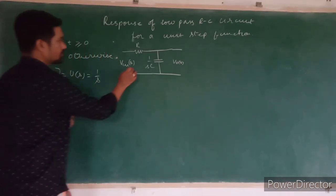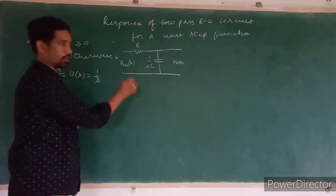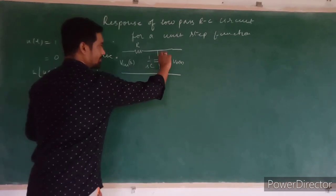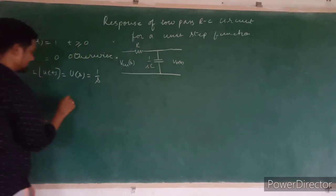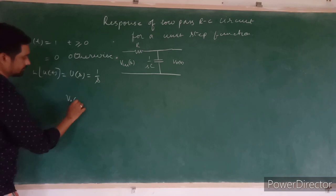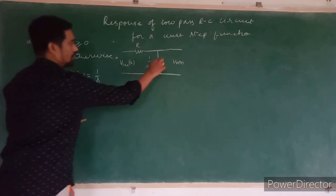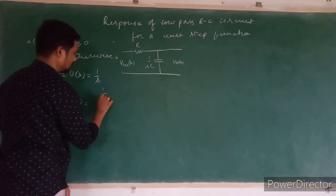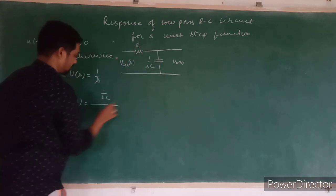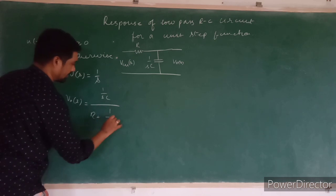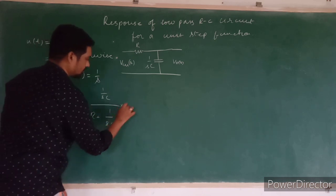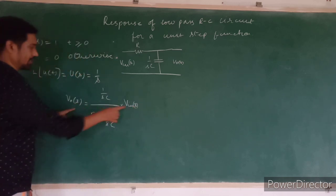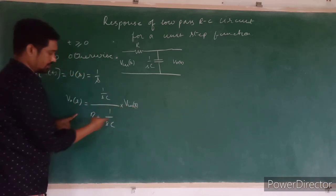According to the potential divider rule, V_naught will be equal to the supply voltage multiplied by this impedance divided by the total impedance. So V_naught(s) equals 1 upon sC, divided by the total impedance R plus 1 upon sC, multiplied by the supply voltage V_in(s), because it is in the Laplace domain.